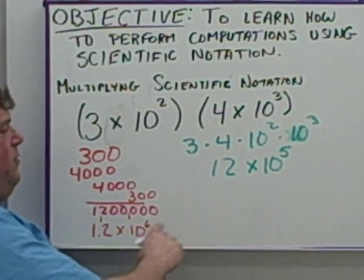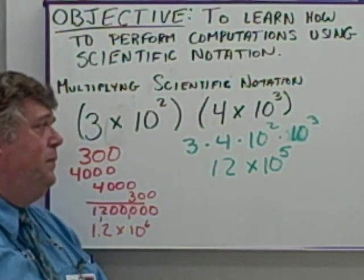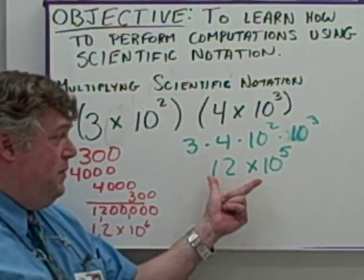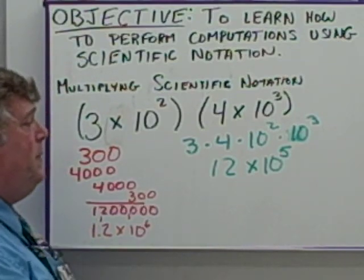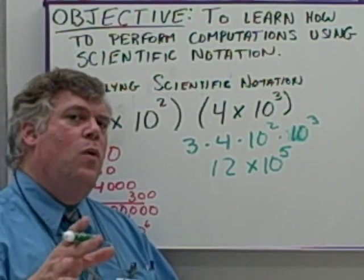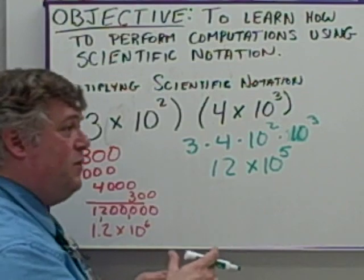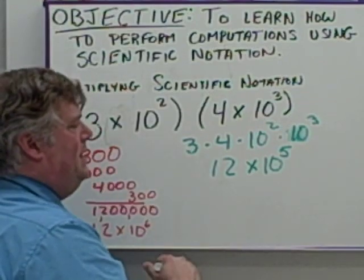Now, this answer and that answer don't match up, but this answer is not in scientific notation. A lot of people may think it is because they see the times 10, but the number in front here has to be between 1 and 10. It can be equal to 1, but it cannot be equal to 10. Somewhere greater than or equal to 1, less than 10.